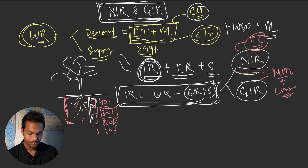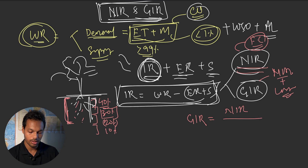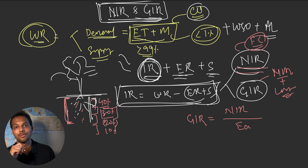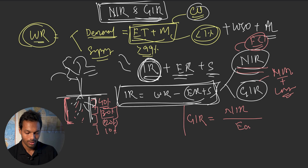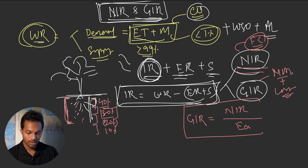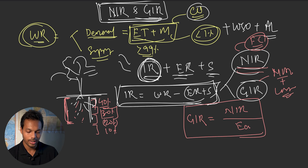The formula is: Gross Irrigation Requirement = Net Irrigation Requirement ÷ Application Efficiency.